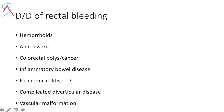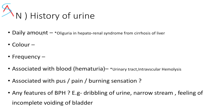For urine history, ask daily amount — there could be oliguria in hepatorenal syndrome due to cirrhosis. Ask color — burgundy-colored urine could indicate porphyria. Ask frequency — increased frequency and dribbling may indicate benign prostatic hyperplasia, with feeling of incomplete voiding. Ask about pus discharge or burning sensation in UTI or pyelonephritis. Ask whether associated with blood in urine, which could indicate urinary tract injury or intravascular hemolysis.